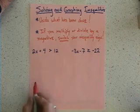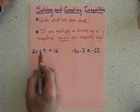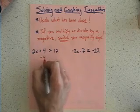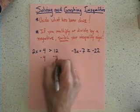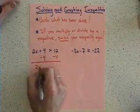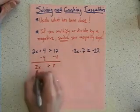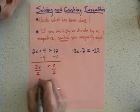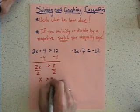Let's go ahead and look at two different examples. Our first example, 2x plus 4 is greater than 12. I'm going to go ahead and undo what's being done. I have a minus 4 on one side and a minus 4 on the other. I'm going to end up with 2x is greater than 8. Now I'm going to divide by 2 on both sides, and I get x is greater than 4.